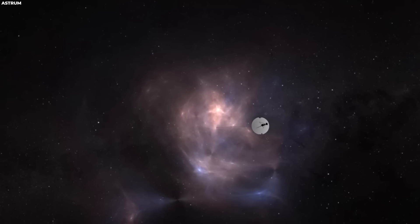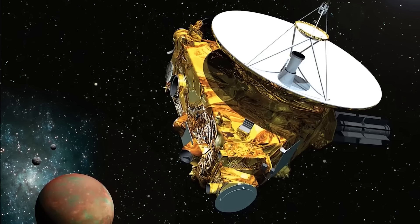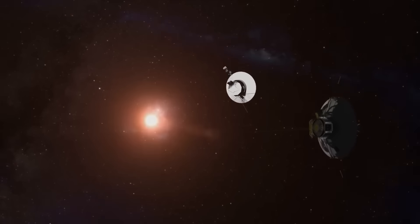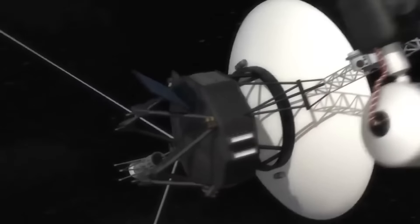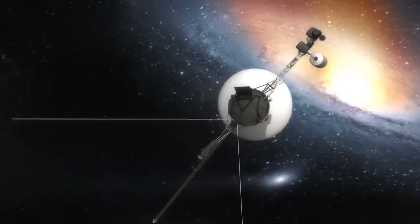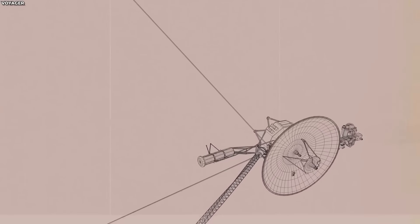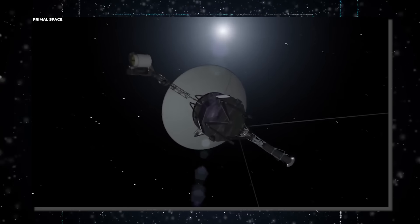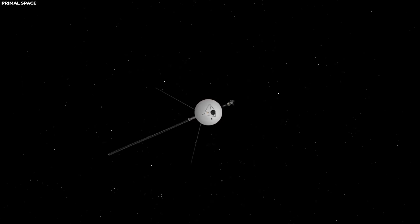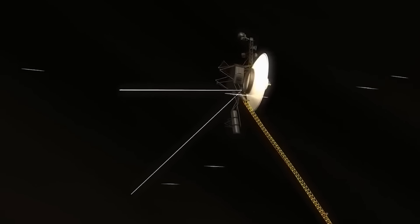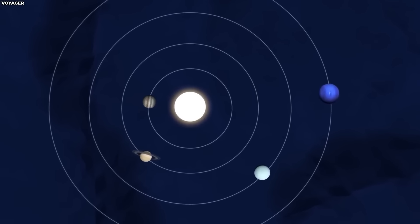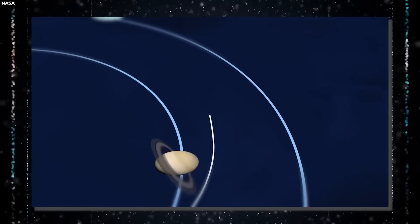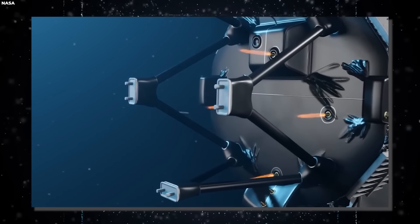Now you're probably wondering, what's the big deal about this interstellar space? Interstellar space is the vast, mostly empty region between stars in a galaxy. Within our solar system, the Sun is at the centre with planets orbiting around it, forming a kind of neighbourhood. Beyond the edge of this neighbourhood lies interstellar space. Our solar system is enclosed in a bubble known as the heliosphere, created by the Sun's wind and magnetic field. Outside this bubble is interstellar space, where the influence of the Sun's wind fades and the environment is shaped by winds and magnetic fields from other stars. This is why entering the interstellar space is such a big deal.